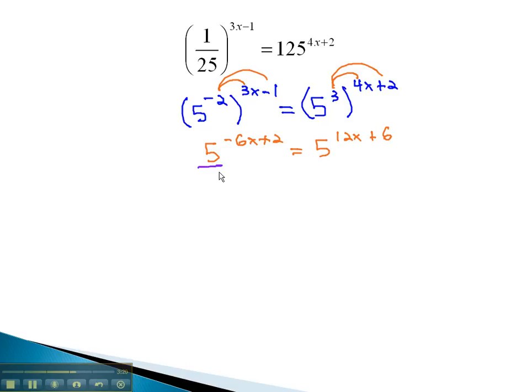Again, we have the same base on both sides. When we have the same base, we can grab the exponents and say the exponents are equal. Negative 6x plus 2 is equal to the 12x plus 6.